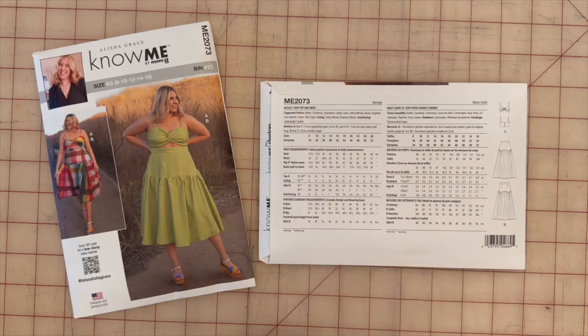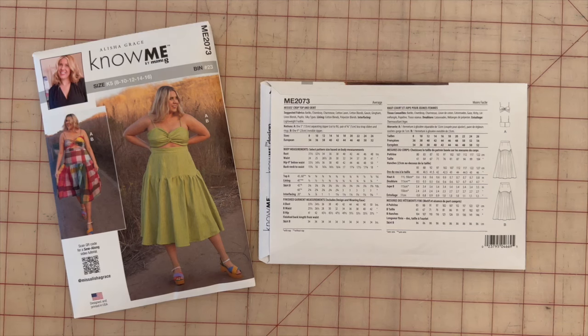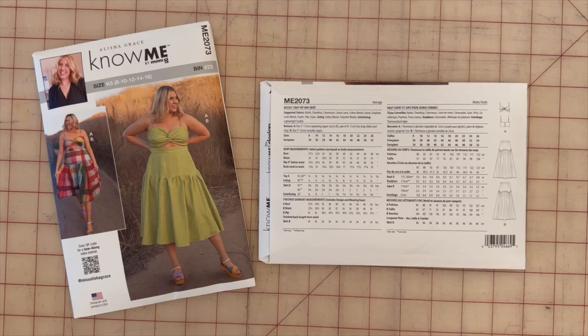Suggested fabrics for this pattern include batiks, chambray, charmeuse, cotton lawn, cotton blends, gauze, gingham, linen blends, poplin, and silky types. You can also use those same fabrics for your lining.